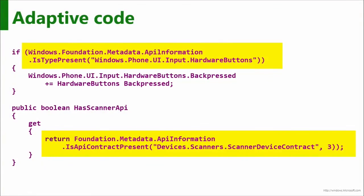So the runtime equivalent of #if is an API called Windows.Foundation.Metadata.ApiInformation. It has a bunch of methods — the first one here is IsTypePresent. At runtime, IsTypePresent checks whether this API is not only present but actionable. If it is, that's a way of saying 'I'm running on a phone.' This is brilliant because it gives you one binary and you can have all the logic in it.